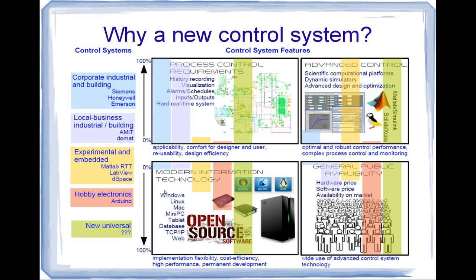Here we have how much the control system uses modern information technology — meaning different kinds of systems and latest versions: Windows, Linux, Macintosh, mini PCs, tablets, modern databases, open source software, and so on. Finally, in this corner we have how the control system is available to the general public in terms of hardware price, software price, and availability on the market — whether a normal person can buy this system on the internet.